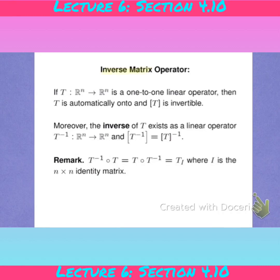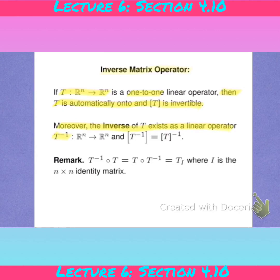Next we look at the inverse of a matrix operator. If T is a matrix operator from R^n to R^n and it is one-to-one, then automatically T is also onto and the standard matrix of T is invertible, according to those equivalence properties we proved. So the inverse of this operator T will exist and is defined by the inverse of the standard matrix of T.